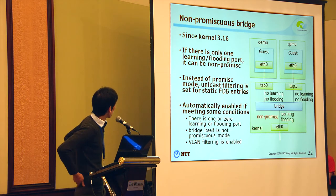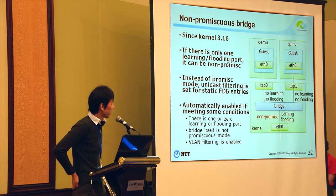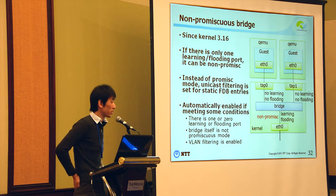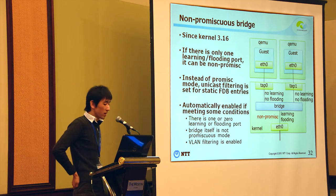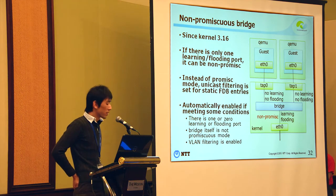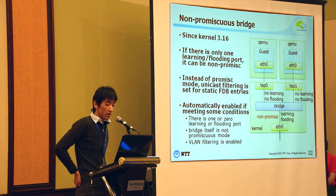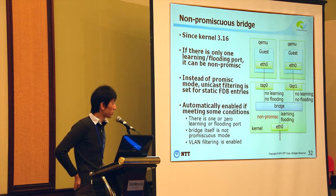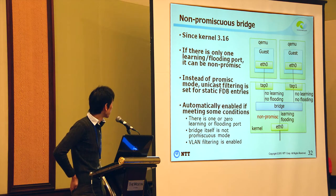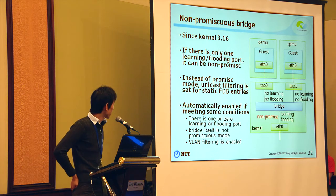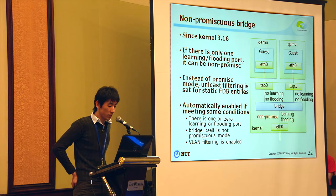The next feature is non-promiscuous bridge. If there is only one learning or flooding port, it can be non-promiscuous. Instead of promiscuous mode, a unicast filter list is set for static FDB entries. This feature is automatically enabled if three conditions are met: there is one or zero learning/flooding ports; the bridge is not in VLAN-aware mode; and VLAN filtering is disabled.